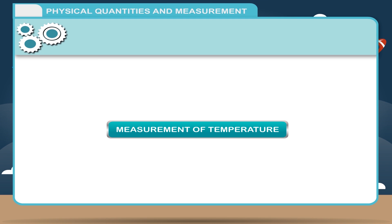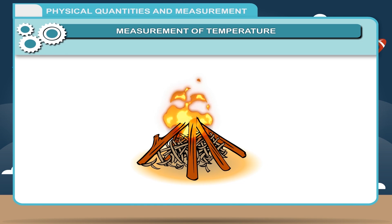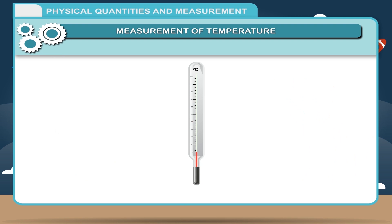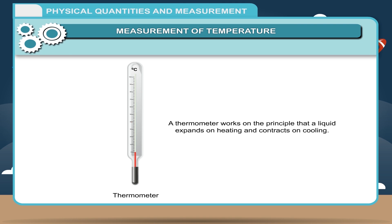Temperature is defined as the degree of hotness or coldness of a body. We can feel the effect of heat when we sit near a hot body. The instrument used to measure the temperature of a substance is called a thermometer. Thermo means heat and meter means measurement. A thermometer works on the principle that a liquid expands on heating and contracts on cooling.